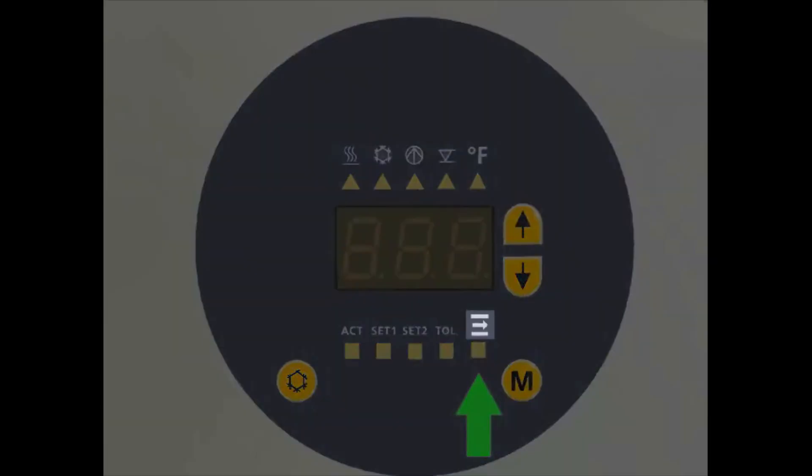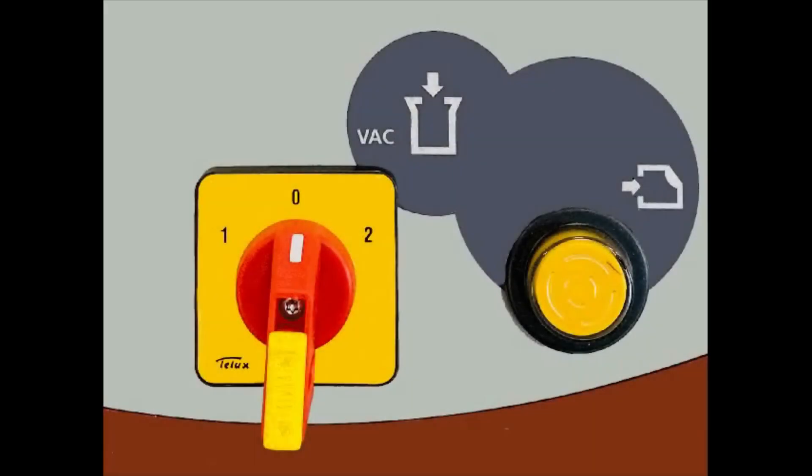On the 200 and 285 degree units, a three-way power switch is mounted on the front. The number one mode will operate the unit in positive pressure. The number two will enable vacuum mode.